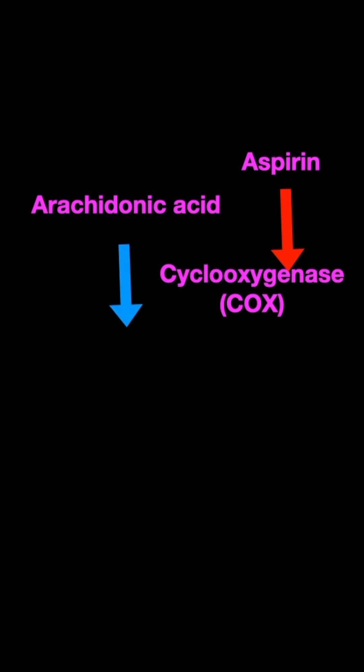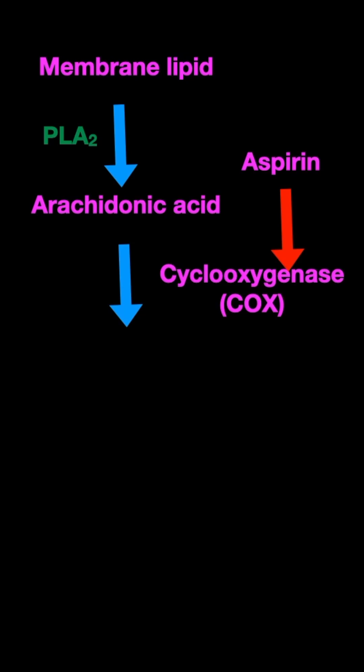Arachidonic acid is a lipid which is present in the membrane. It is released from the membrane by means of another enzyme, phospholipase A2. The cyclooxygenase enzyme then acts on this arachidonic acid.